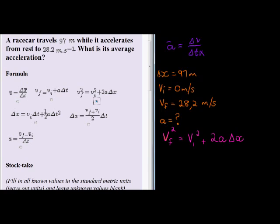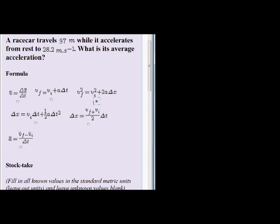Let's substitute now. Substituting gives me my future velocity: 28.2 squared is equal to 0 squared plus 2 times acceleration - which is what we need to calculate - and delta x is given as 97 meters.